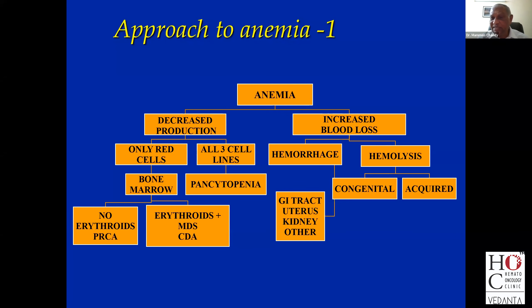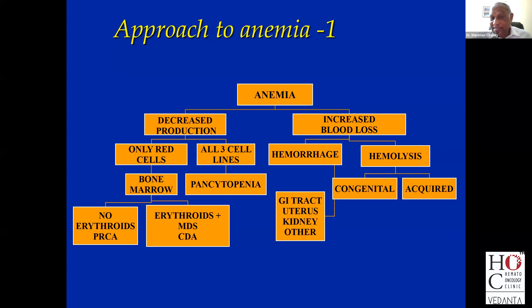If it's hemolysis, it is either congenital or acquired. If you have decreased production with reticulocyte count low and all three cell lines affected, it's pancytopenia. Only red cells — go to the bone marrow. No erythroids in the marrow — diagnosis is pure red cell aplasia. Erythroid cells plenty in the bone marrow yet the patient is anemic — these cells are not maturing. You're most probably dealing with a myelodysplastic syndrome or a congenital dyserythropoietic anemia.